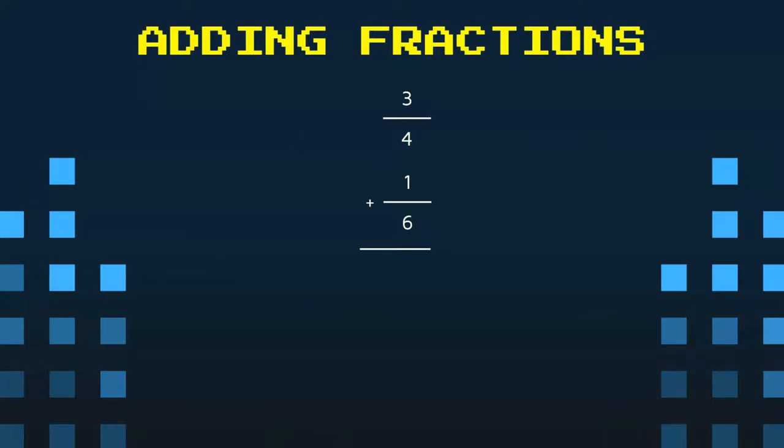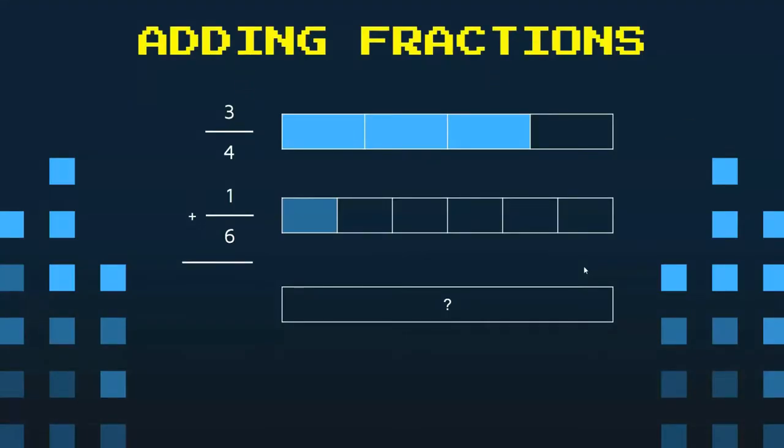I like to stack my fractions, especially when the denominators are different, because I will be working to the side. Now let's take a look at the bars first, the fraction strips. There you can see in the first bar I have three fourths shaded, and in the second bar I have one sixth shaded.